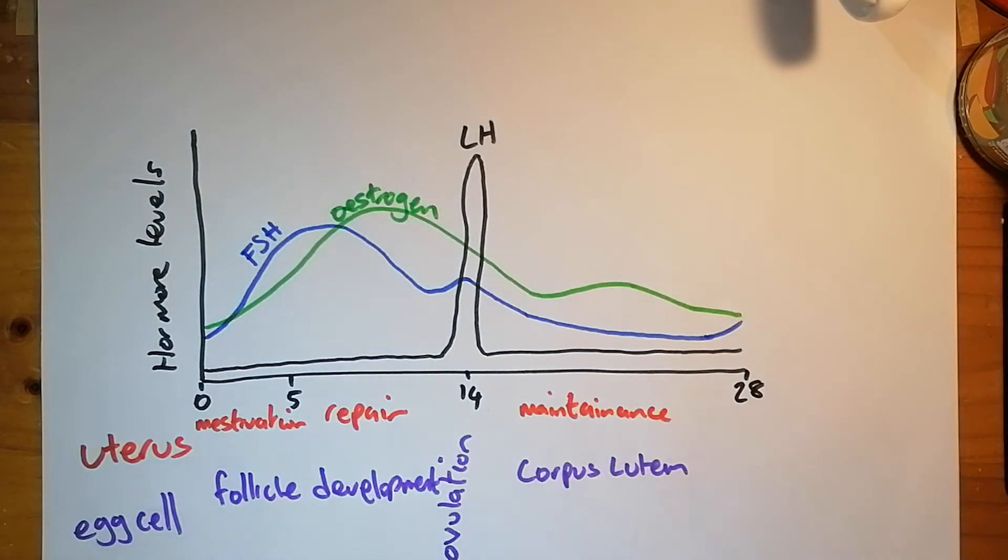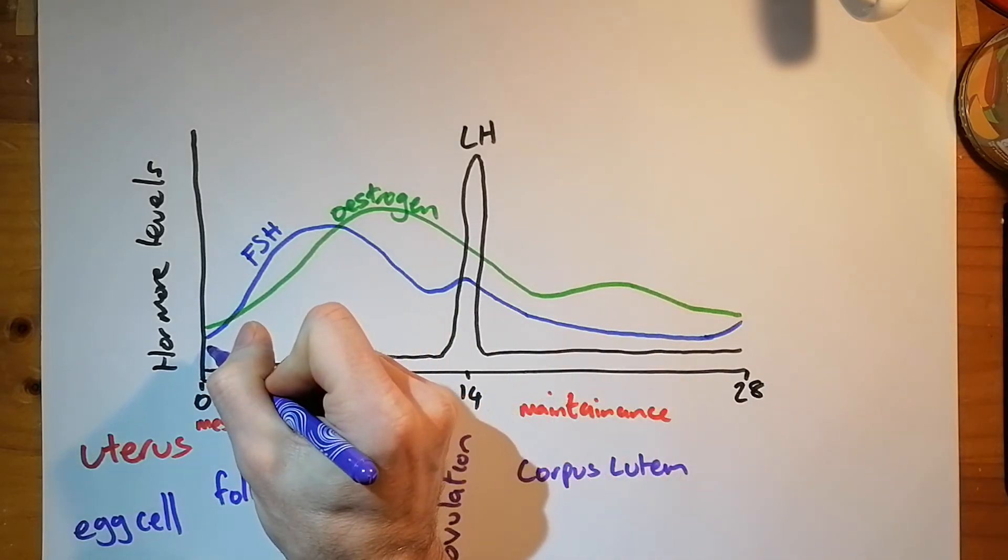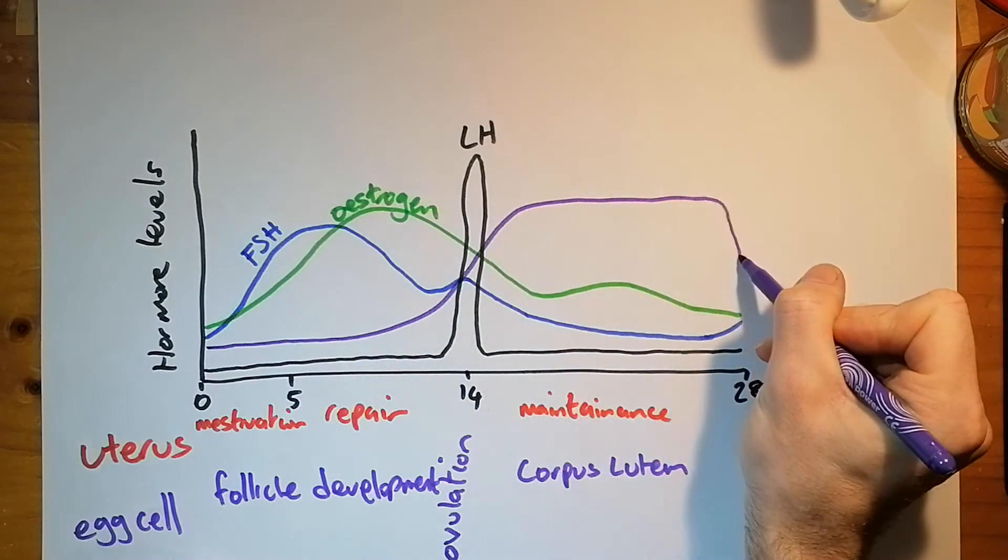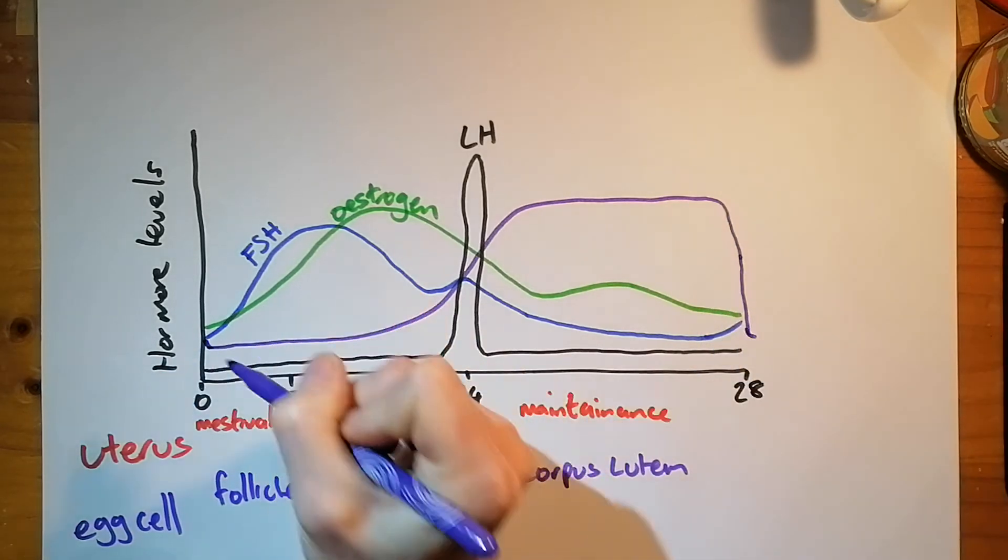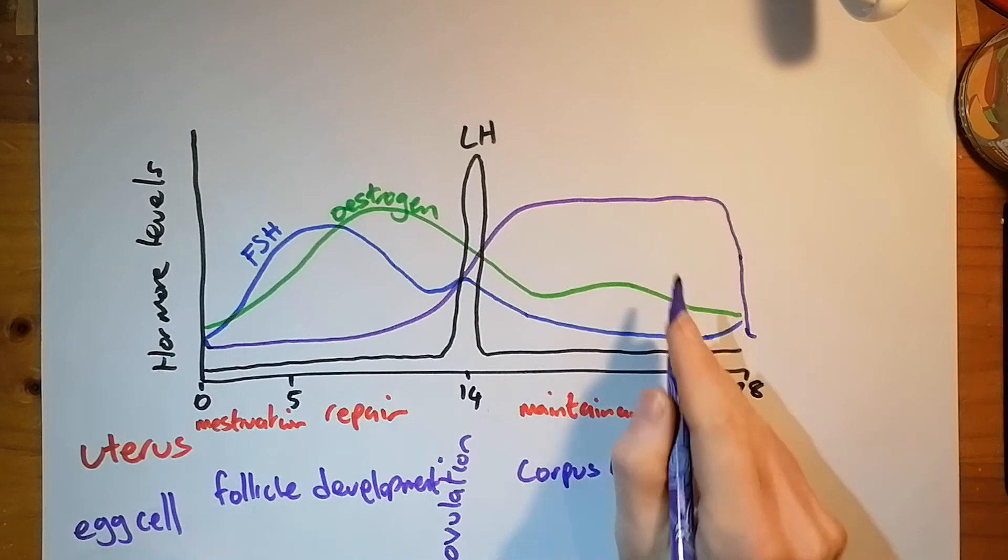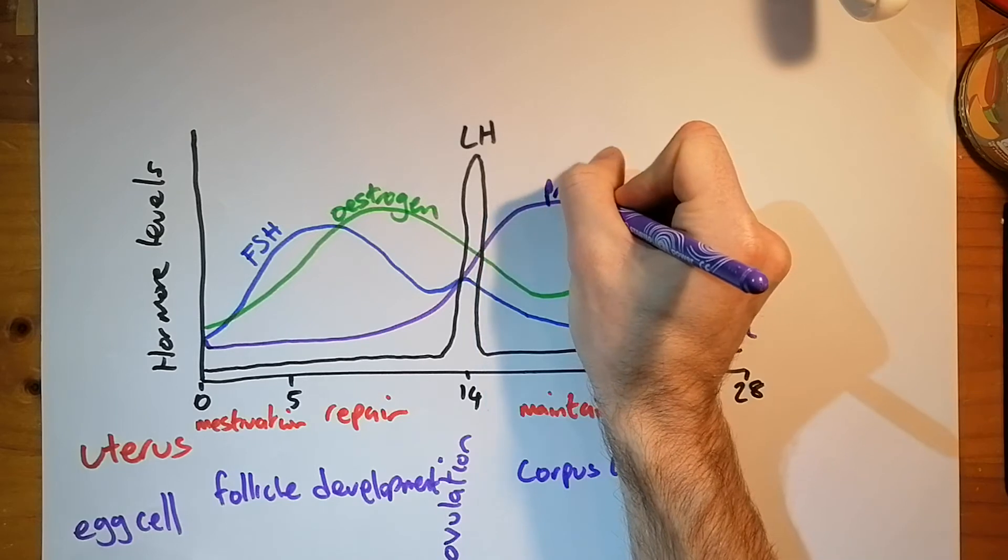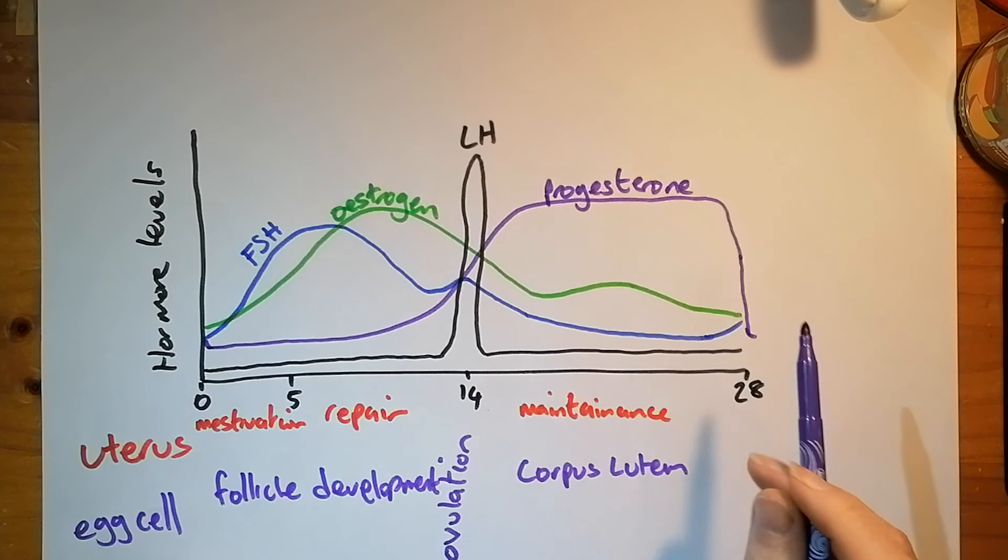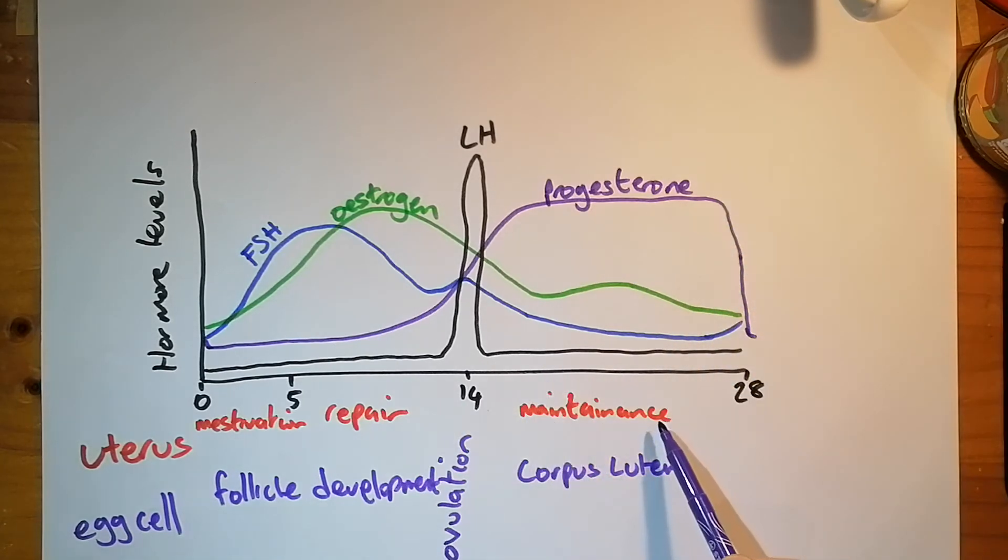And then you've got a rather important hormone, which does something like this. It's low in the first half of the cycle, goes up, and then falls. And the fall there is quite sharp. So it goes back down there. It's level there quite sharply at the end of the menstrual cycle. And that's progesterone.